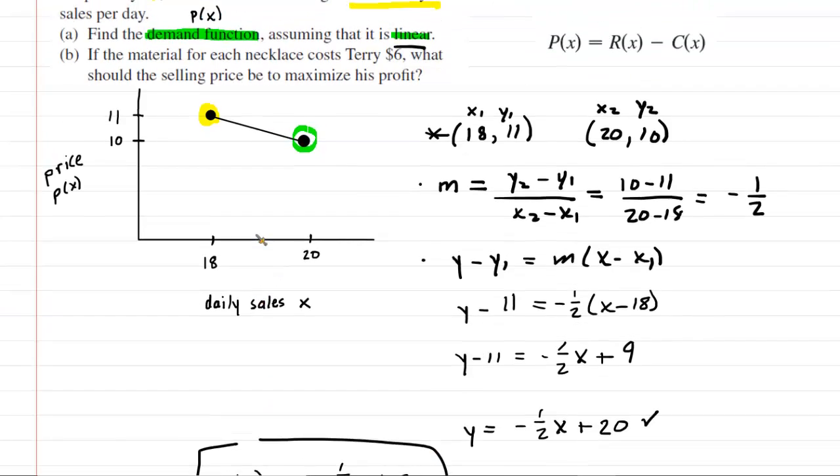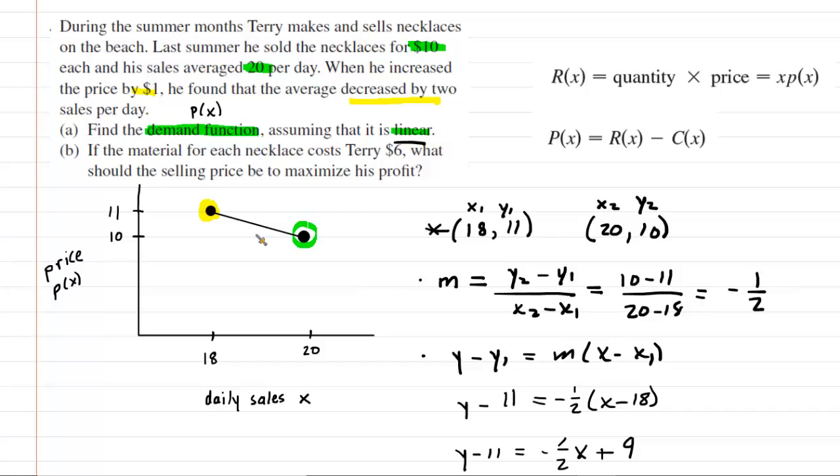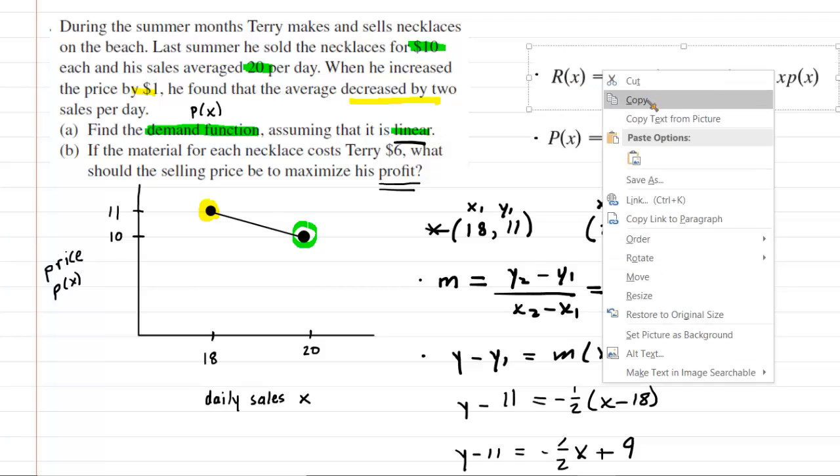Let's go and look at part B. It says, if the material for each necklace costs Terry $6, then what should the selling price be to maximize profit? Now we have listed a couple equations over here. And you can see that the equation for profit is equal to the revenue minus the cost. So if we're going to be able to solve part B, then we're going to need to come up with two additional equations. We need the revenue equation. And then we also need the cost equation.